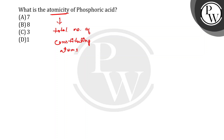Let's write the formula of phosphoric acid: H₃PO₄ — 3 Hydrogen, 1 Phosphorus, 4 Oxygen.